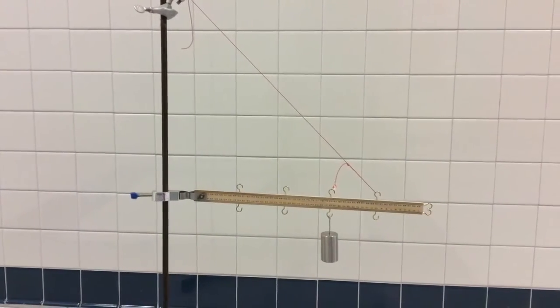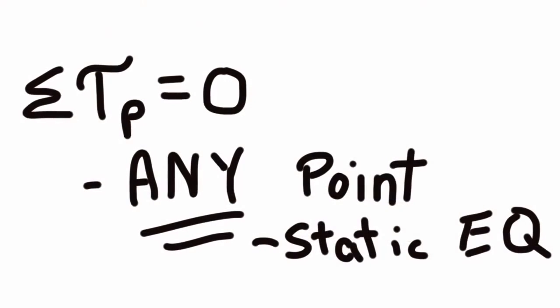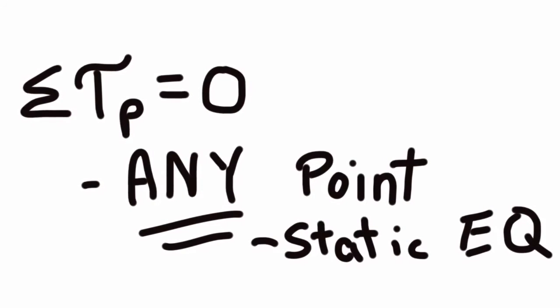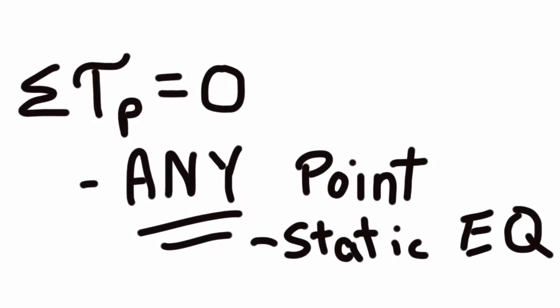So we have two equations with Fx, Fy, and T as the unknowns. We need to move on to another equation, the second condition for equilibrium.